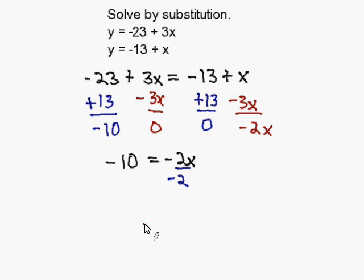To solve for x, you divide by negative 2 on both sides, and you get x equals 5.